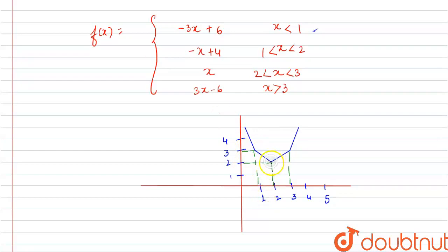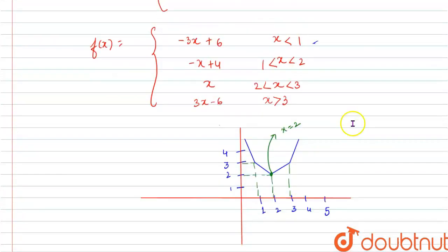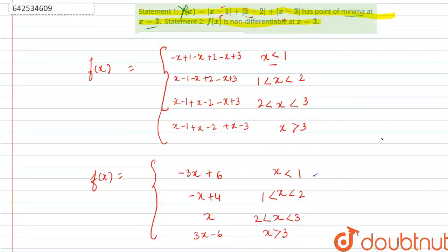We can see that it has a minima at 2. But in statement 1, it is written that it has a point of minima at x equals 3, so statement 1 is wrong. And statement 2, which says that it is non-differentiable at x equals 3, is correct because there is a sudden change over here. So it is non-differentiable at x equals 3. Statement 2 is correct.